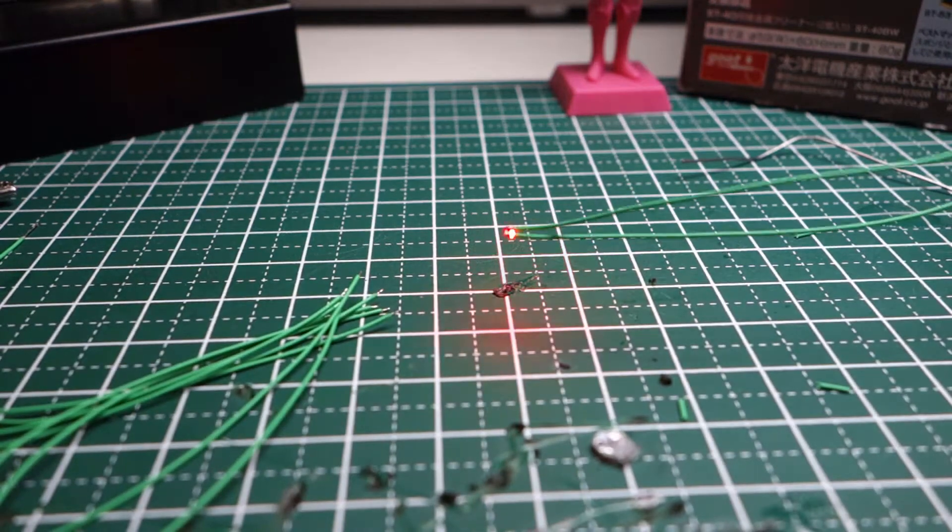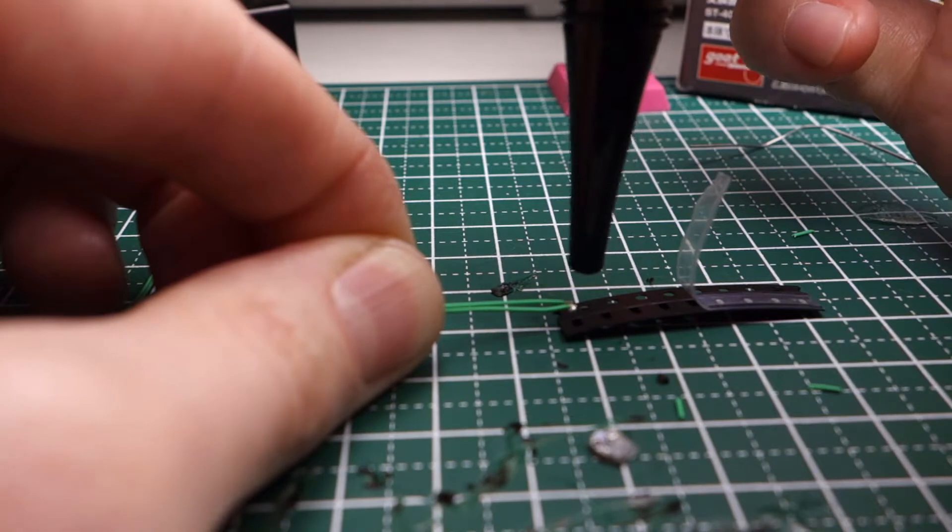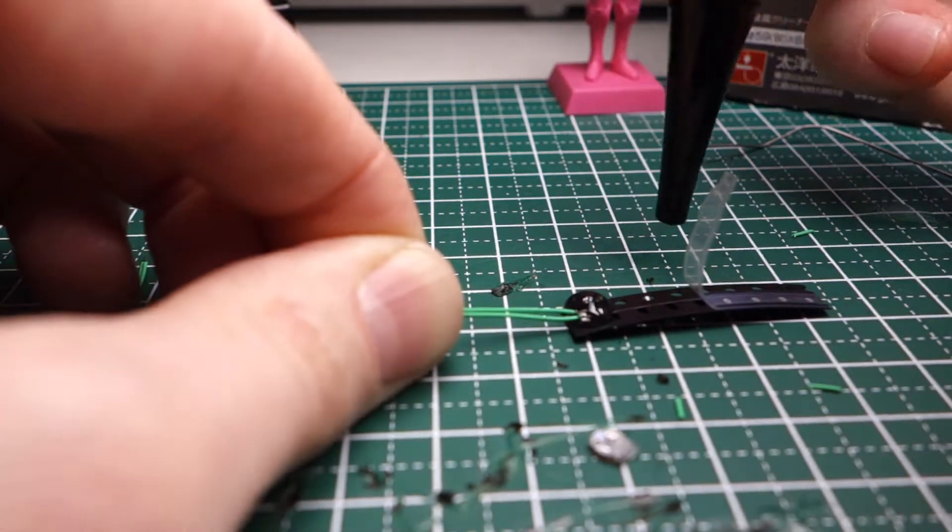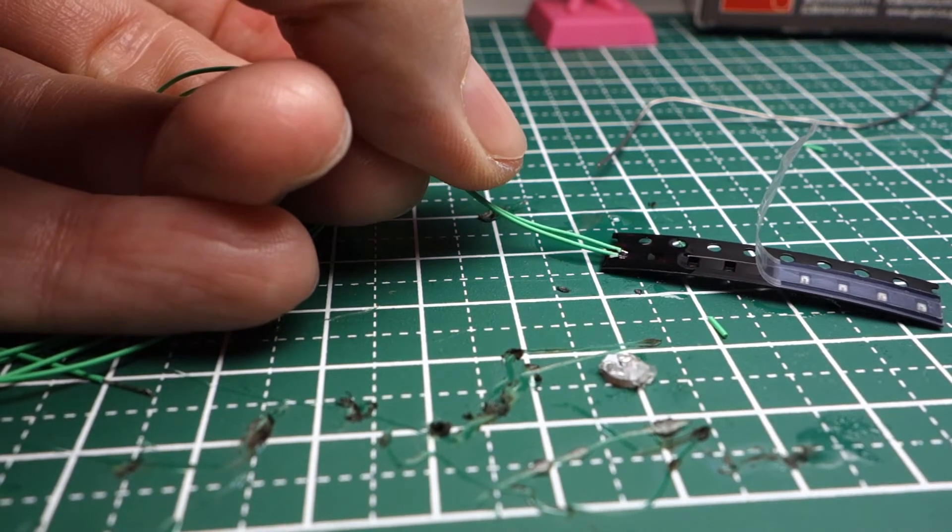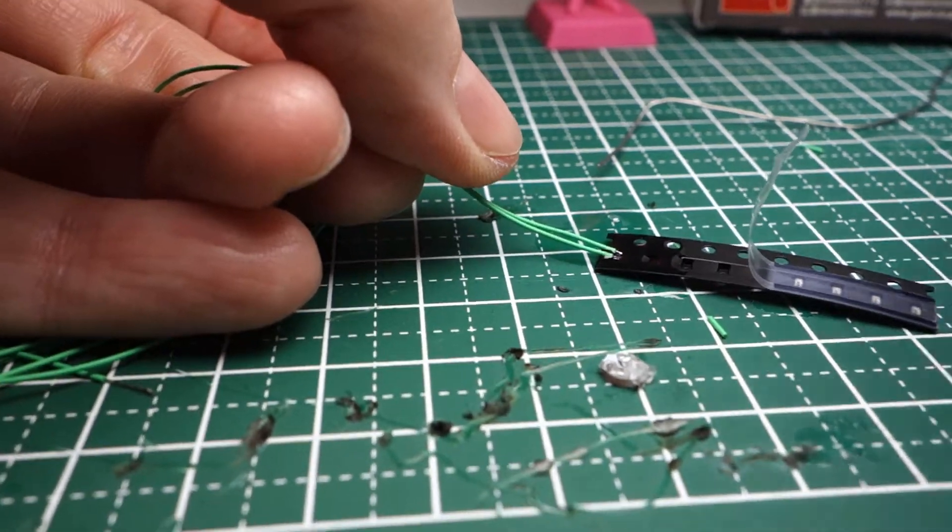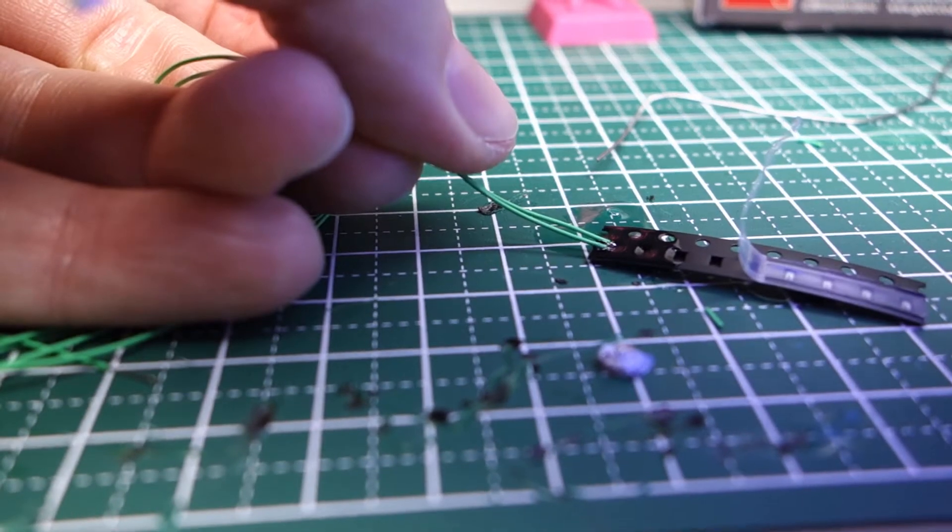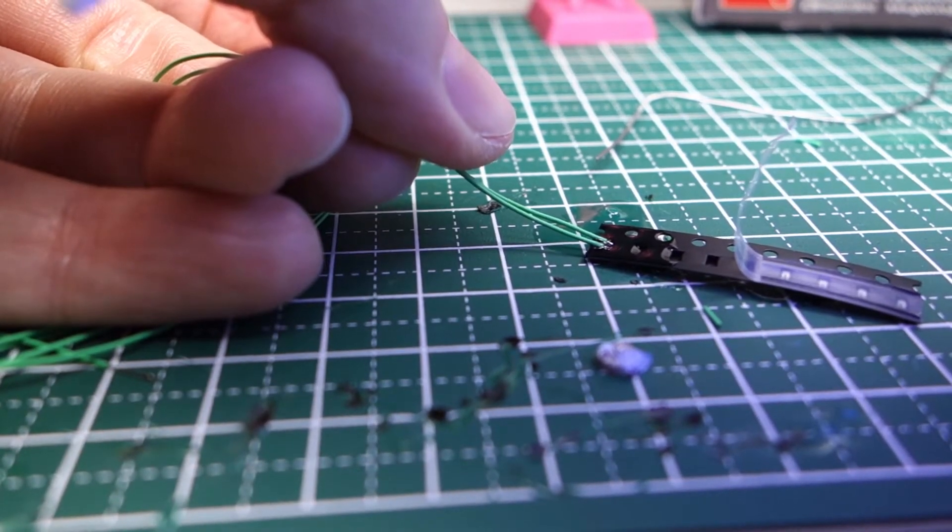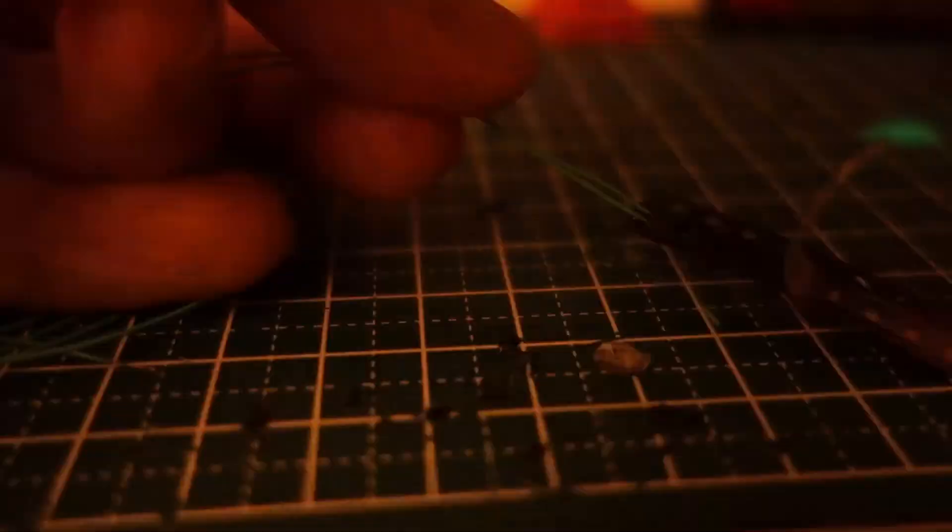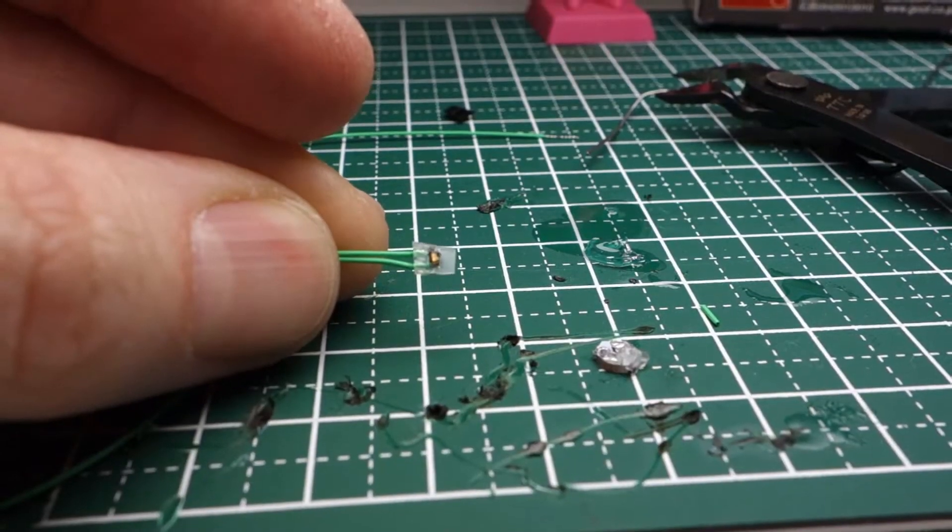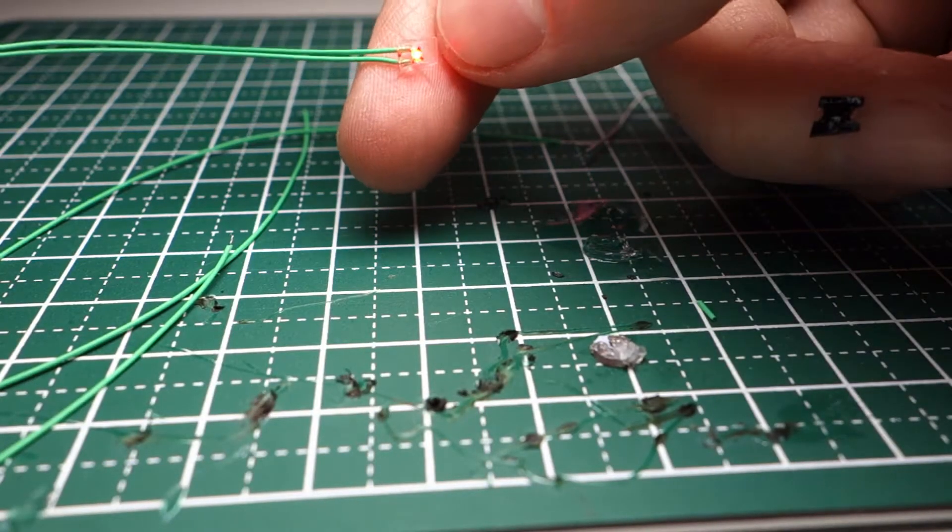Now in this step I used some UV resin to encase the LED because these wires and these tiny LEDs easily get pulled off of their solder points. So I'm just going to encase it in some UV resin to make it a bit stronger and we don't have to worry about it coming apart on us. So there it is in its little tiny case. It still lights up. Now we're good to go to the next step.